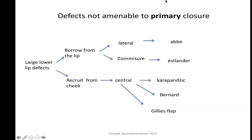For large lower lip defects not amenable to primary closure, we either borrow from the lip or recruit from the cheek. Borrowing from the lip depends on the location of the defect: a medial or lateral defect may use an Abbe flap; a lateral defect may use a Slander flap; if there is no tissue to borrow from the upper lip, recruit from the cheek. For a central defect, a Karapandzic, Bernard, or Gillies flap is used. You must decide up front whether you're borrowing from the lip or recruiting from the cheek.